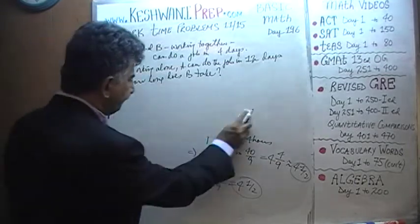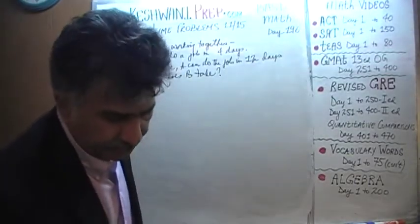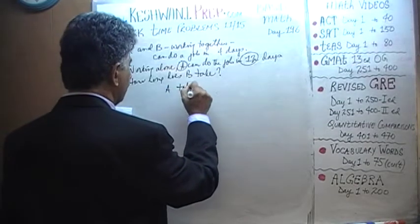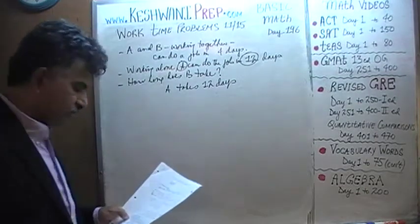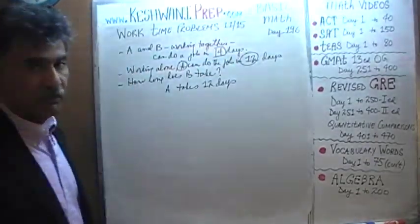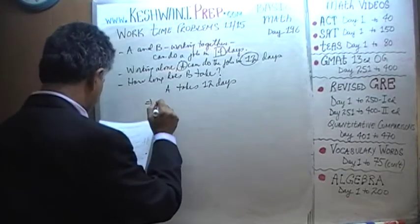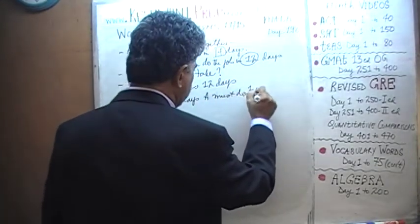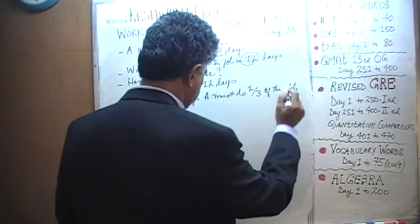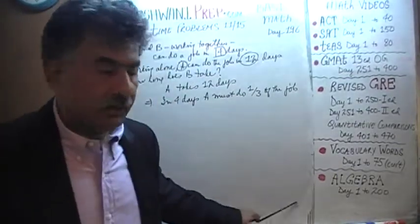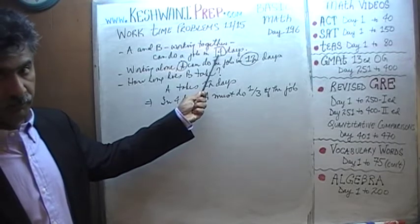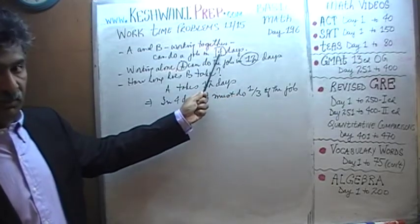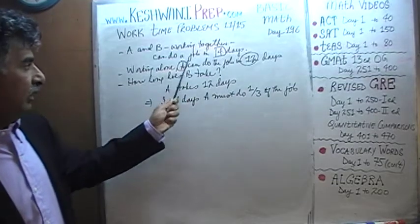Alright, here we go. A takes 12 days to do the job alone. When they work together the job is done in 4 days. That implies that in those 4 days, A must do one-third of the job — because if it takes A 12 days to finish the entire job alone, in 4 days A completes one-third of it.